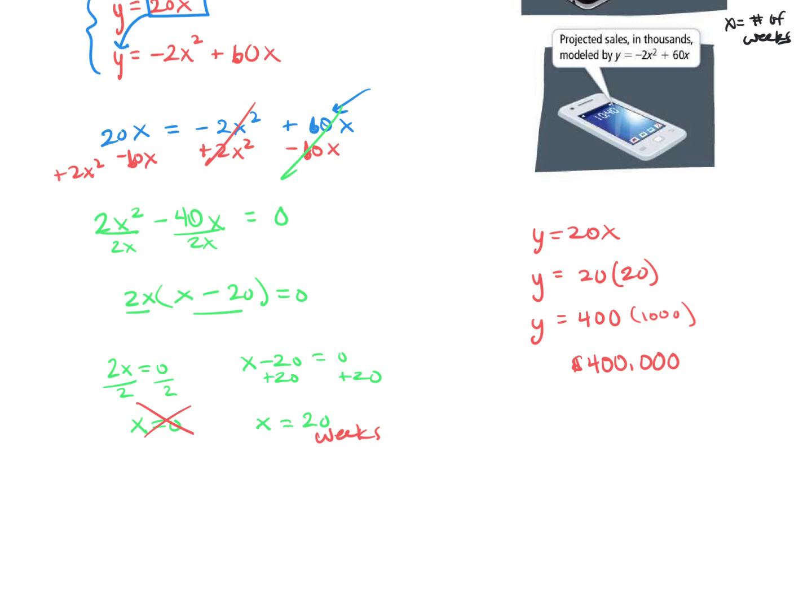So to answer the question, both phones will have weekly sales of $400,000 after 20 weeks. That's how long it will take for those sales to be the same.